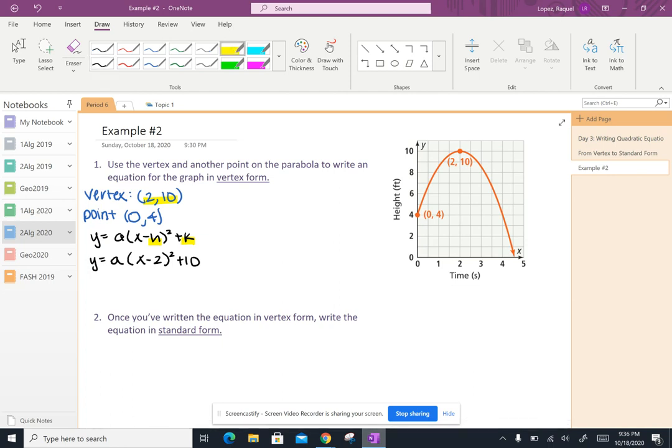So I've already plugged in those values. The next thing I want to do is plug in 0 for x and plug in 4 for y, because when I plug in those values I've got enough information in my equation to help me figure out what my stretch should be. So let's go ahead and substitute that.